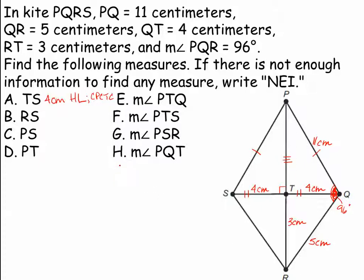Part B asks what is the measure of RS? We know that RQ is 5 centimeters, and these two segments are congruent to each other — that's a special property of a kite. So RS equals 5 centimeters. Part C asks what is the measure of PS? We've already noted that PS and PQ are congruent — another special property of a kite. They have two pairs of congruent sides, so PS equals 11 centimeters.